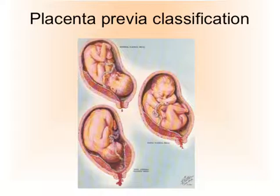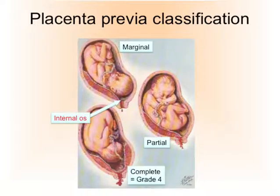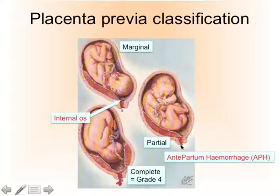The classification of placenta previa depends on how much of the placenta covers the internal os. The top picture shows that the placenta is close to the internal os but does not cover the os — that's the so-called marginal placenta previa. The next picture shows the placenta partly covering the os — partial placenta previa. And the picture below shows the placenta completely covering the os, also called grade 4 in another classification system. Antepartum hemorrhage depicted here is not a necessary symptom of placenta previa.